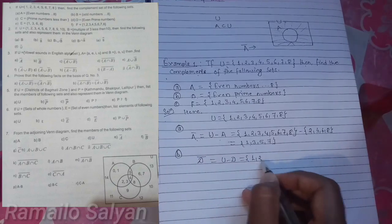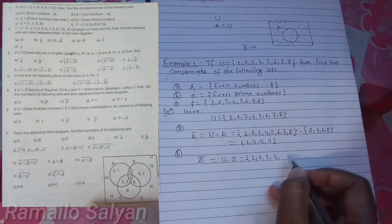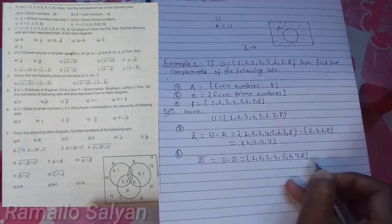Next, B complement equals U difference D. The members of U are {1, 2, 3, 4, 5, 6, 7, 8}.